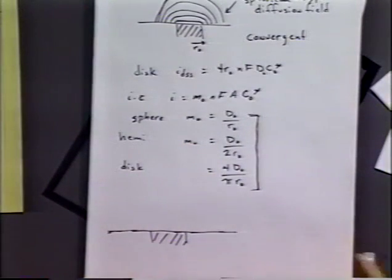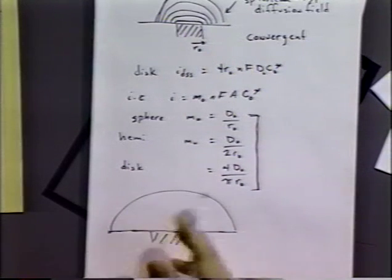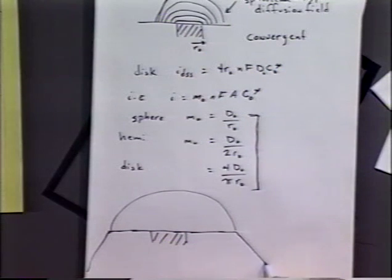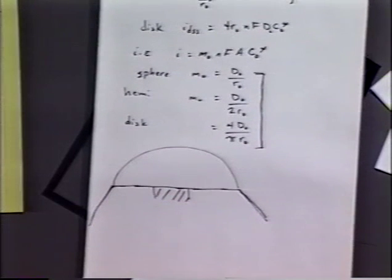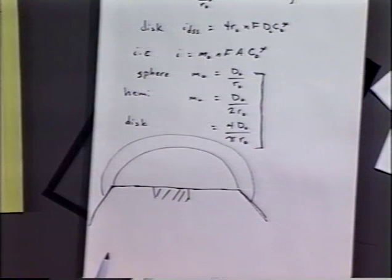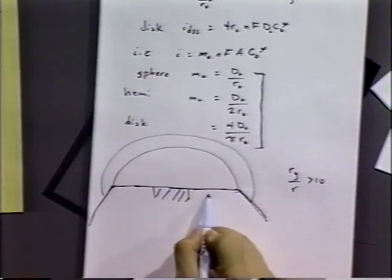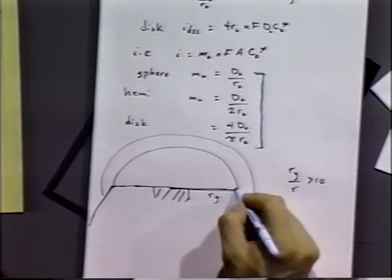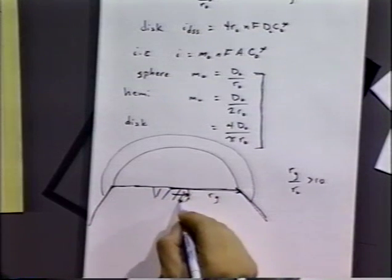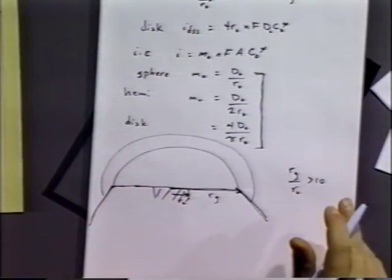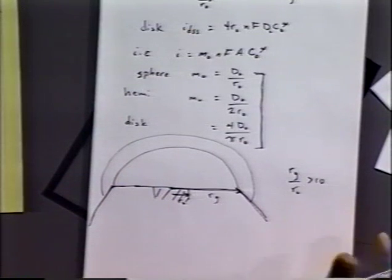The disk does have some limitations with kinetics. First, we need the disk embedded in an infinite plane — it must be large enough so that we don't extend our spherical diffusion field beyond that plane. If the edges of the glass are truncated, the plane is insufficient and we see deviations from expected behavior. Generally, if Rg/R0 is greater than 10 — where Rg is the glass radius — that's good enough and we don't see much effect, but if it's less than that, we will see some effect.